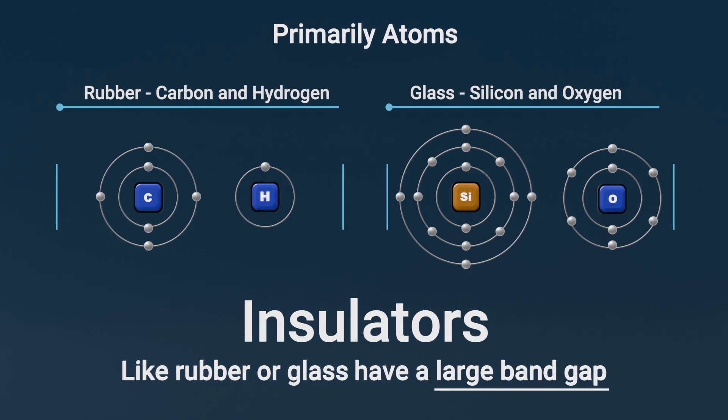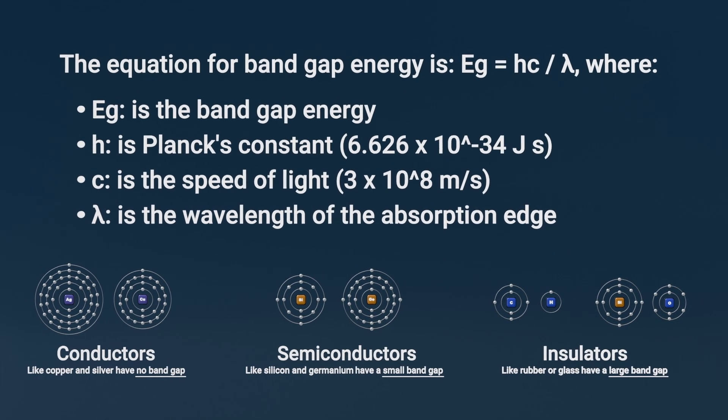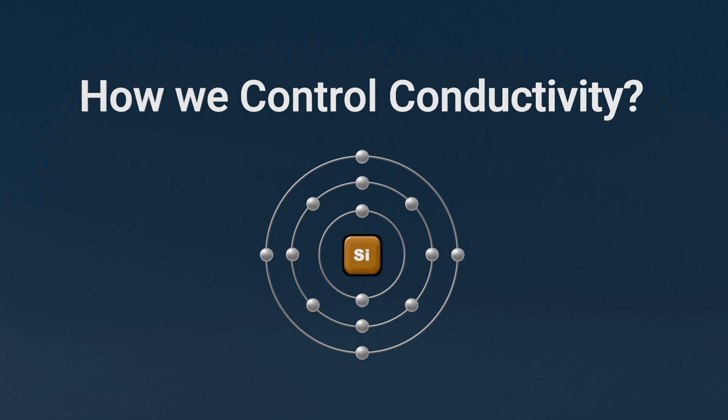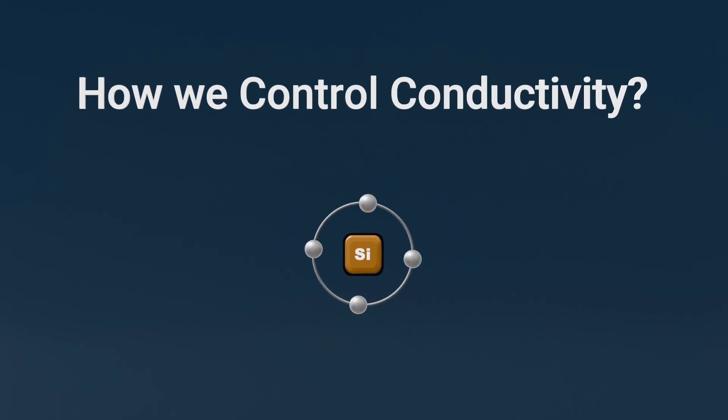The formula for band gap energy is denoted as Eg. So how do we control conductivity? Well, that's done by a process called doping.